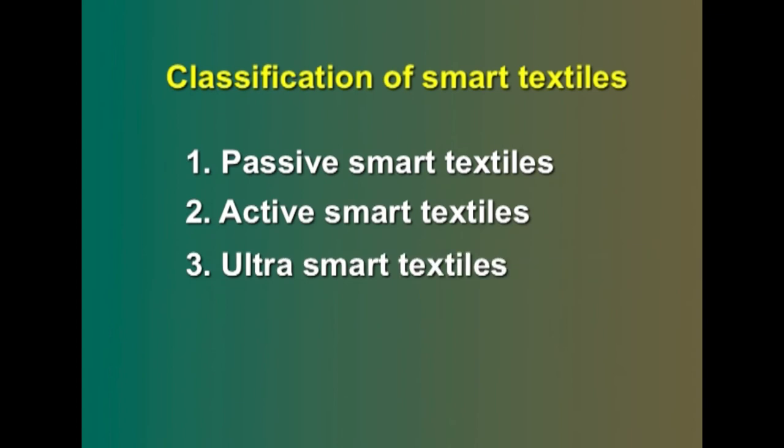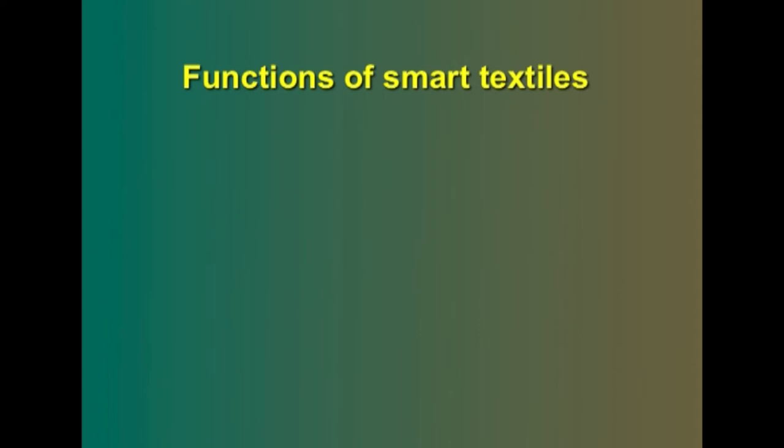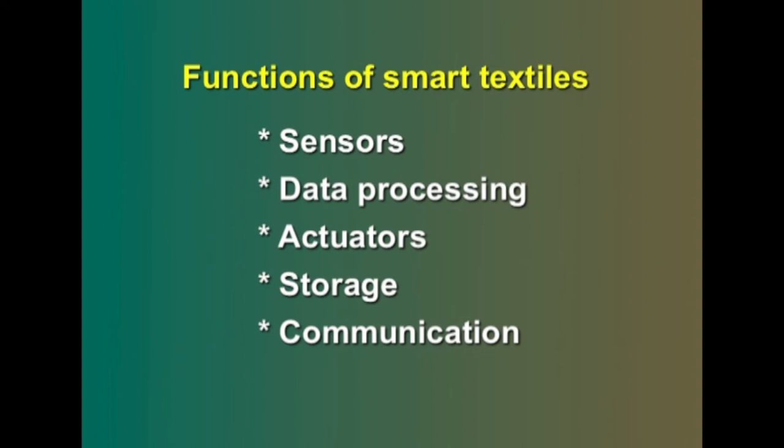Ultra smart textiles are the third generation of smart textiles, which can sense, react, and adapt themselves to environmental conditions or stimuli. Five functions can be distinguished in an intelligent suit: sensors, data processing, actuators, storage, and communication. Not all intelligent suits will contain all functions. The functions must be compatible with the function of clothing — comfortable, durable, resistant to regular textile maintenance processes, and so on.